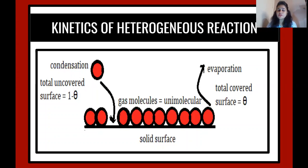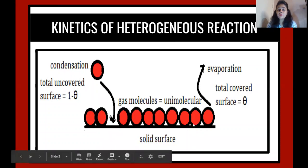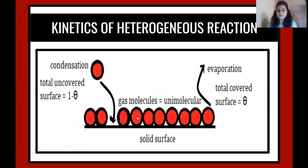This equation is also called as the Langmuir adsorption isotherm. To understand this theory, we will have to understand what exactly the process occurs and how exactly the process is taking place. If we have a solid surface, there will be gas molecules which will be getting adsorbed on the surface of the solid. Now there are two different ways — one is called adsorption and the other one is called absorption.